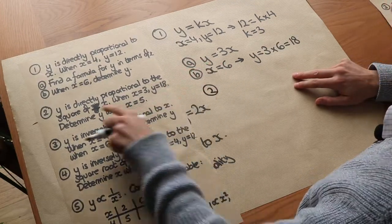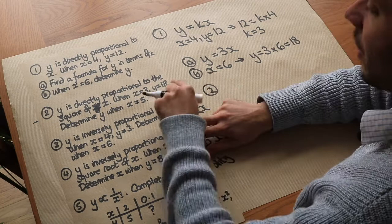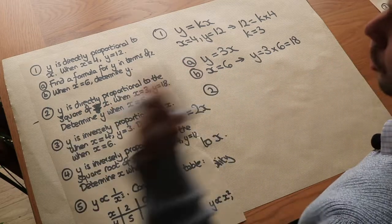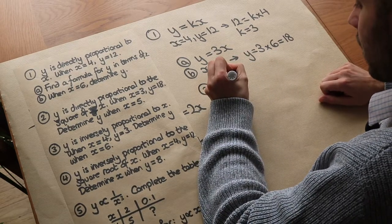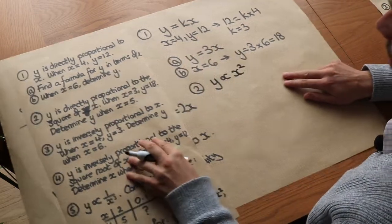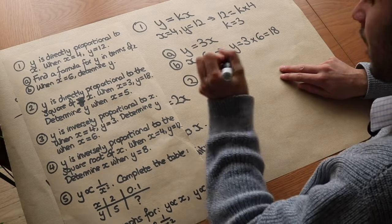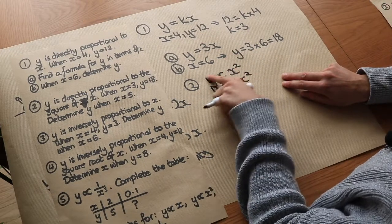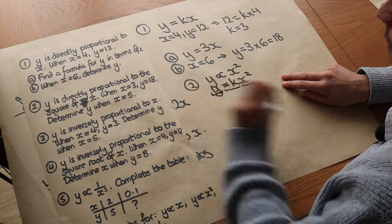Question 2 is a bit harder: y is directly proportional to the square of x. A mistake many students make is not noticing extra words like 'the square of x' — if you miss that in an exam question you'll get no marks at all. So let's express that: y is proportional to x squared. The square of x means x squared. Remember we can replace that proportionality symbol with equals k times, giving y equals k times x squared.